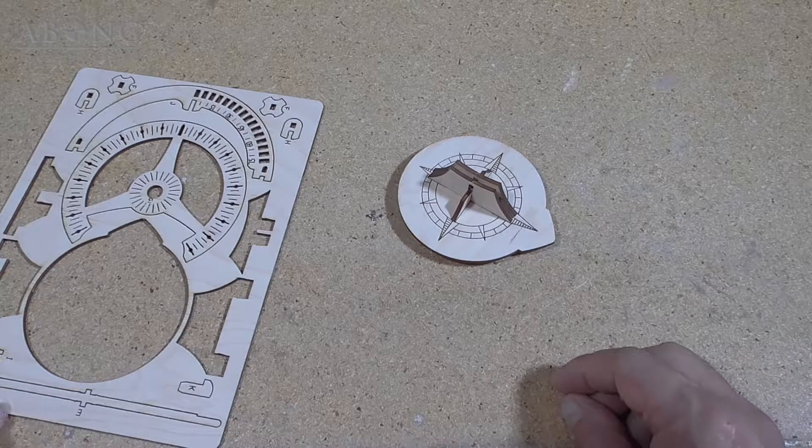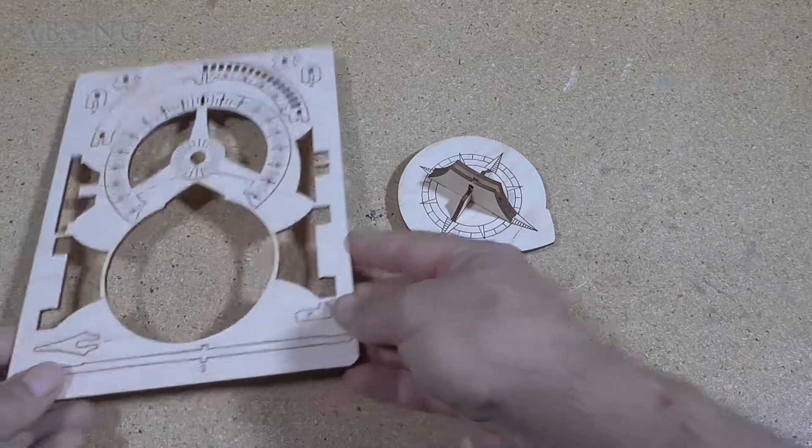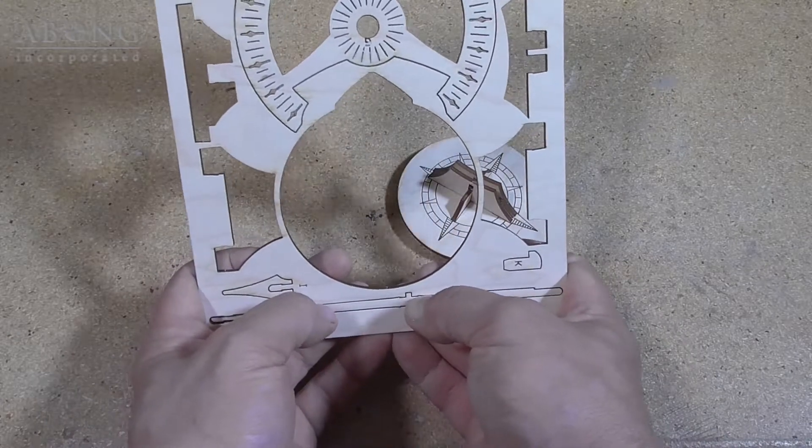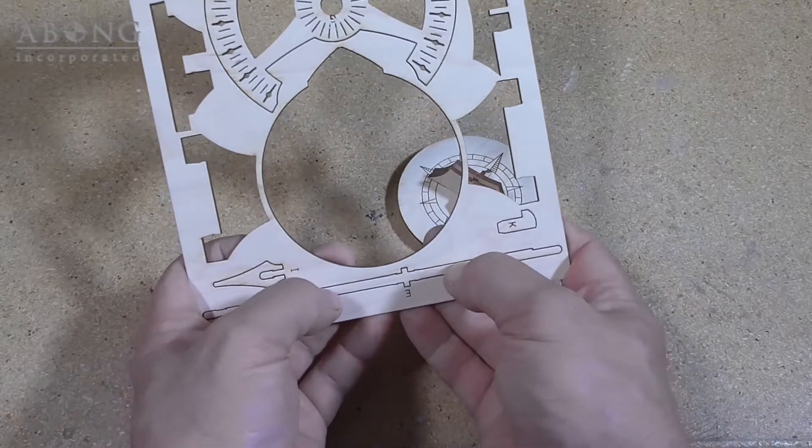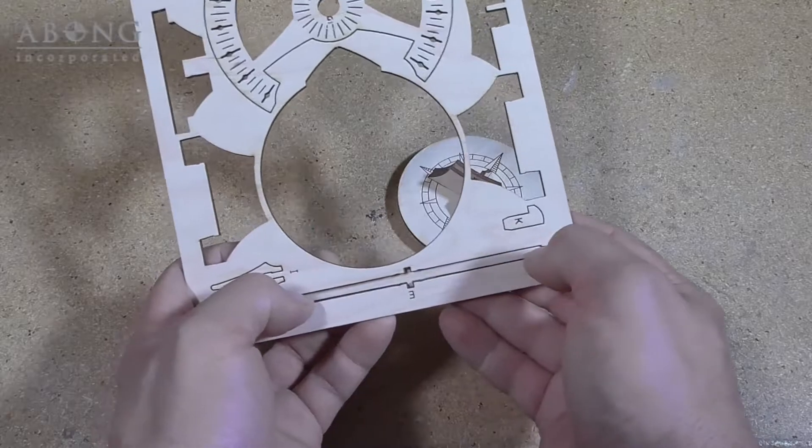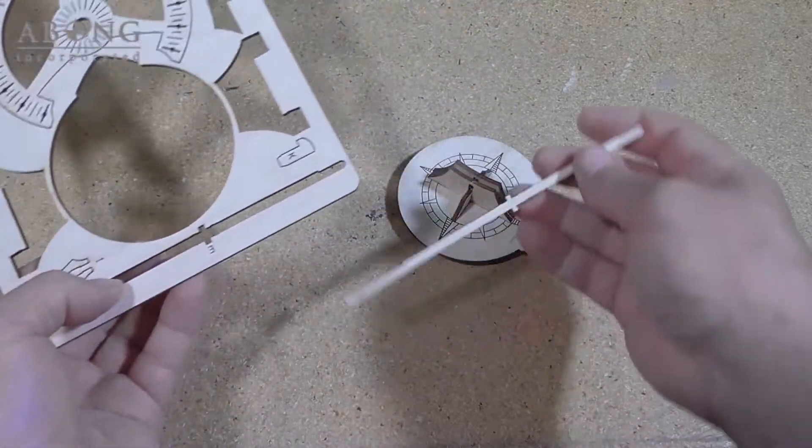Excellent. That's the base. Now we're going to build the dial. So it starts with a gnomon. The gnomon's part E. It's a delicate part, so be a little bit careful with it.